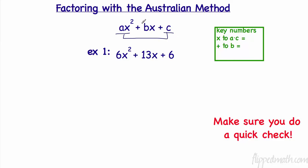So when we multiply a times c we put that number here, and our b stays by itself. In this case, 6 times 6 gives us a times c equals 36, and then we have to add up to 13. We need to find two numbers that multiply to 36 and add to 13.